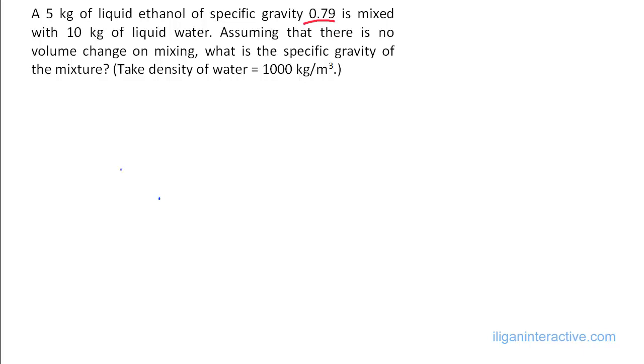So first, let's figure out what is the density of your liquid ethanol. So clearly here, ρ of ethanol will be specific gravity times density of the reference fluid, which is water. In this case, that will make it 790 kg per m³, right? Using the given SG.